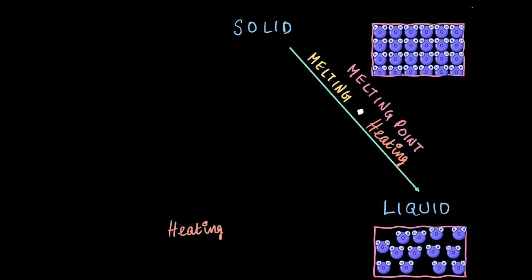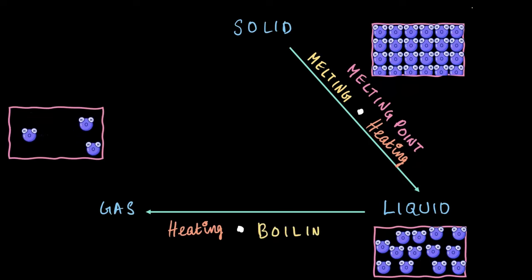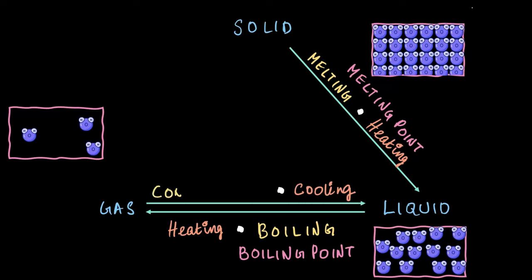For water, the melting point is zero degrees Celsius. Next, if we keep heating, the liquid changes into gas through a process called boiling, which happens at a temperature known as its boiling point. For water, this is 100 degrees Celsius.